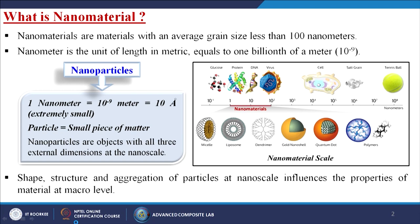Today we are going to discuss the microscopic structural analysis of nanomaterials, part 1. We have divided all the microscopic structural analysis of different types of nanomaterials into different parts, as there are several types of experiments. First, let us understand what nanomaterials are. Nanomaterials are materials with an average grain size less than 100 nanometers. A nanometer is a unit of length in the metric system equal to 1 billionth of a meter, that is 10 to the power of minus 9.